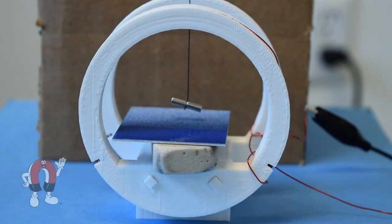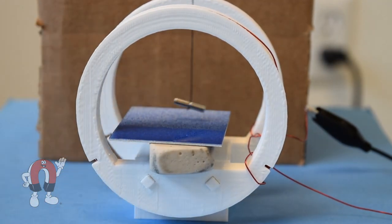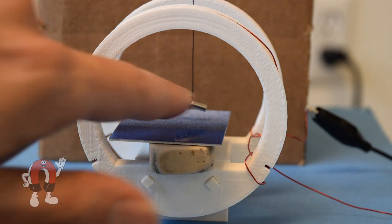To reduce how much the magnets wobble, we add an aluminum plate to dampen the motion. Any motion by the magnets induces currents in the aluminum, which act to slow it down.